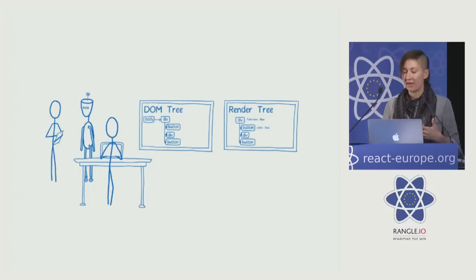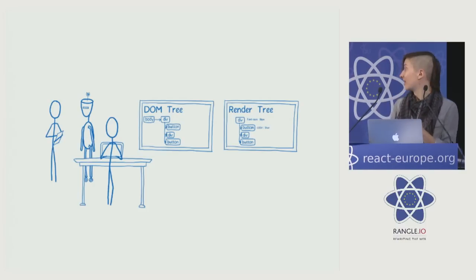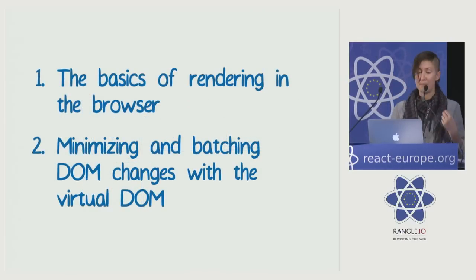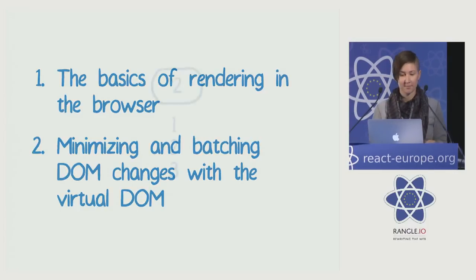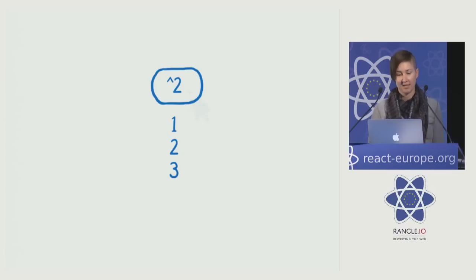So let's take a look at how React and your code work together to direct the main thread. This brings us to part two: minimizing and batching DOM changes using the virtual DOM. We'll start with a webpage that your team is going to be building — just a button with a list. When you click the button, it's going to square a value. Let's walk through the initial render.